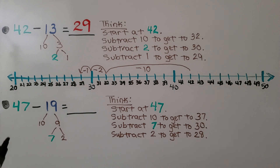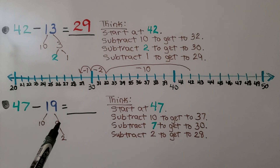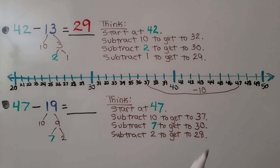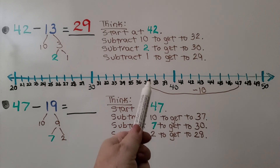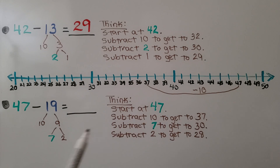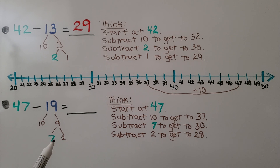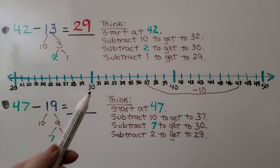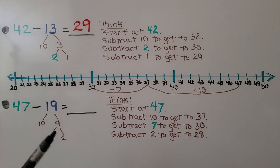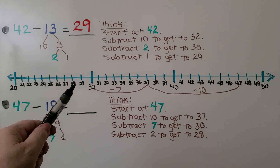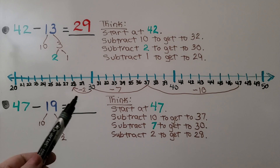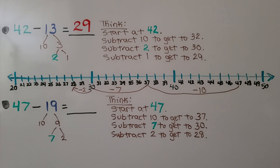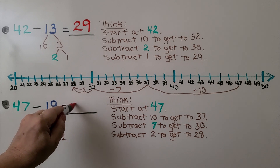Let's try it one more time. We've got 47 minus 19. We're going to break the 19 apart into a 10 and a 9. We subtract 10 from 47 to get to 37. We break the 9 into a 7 and a 2. We subtract 7 to get to 30 as a tens number, then subtract 2 to get to 28. We know 47 minus 19 is equal to 28.